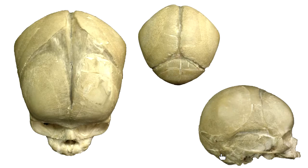That wraps up the skull. If your test is 75 questions, approximately 25 will be on the skull, so take the time to learn all of this information as quickly as you can. Now let's move on to the rest of the axial skeleton — the ribs, rib cage, and vertebrae.